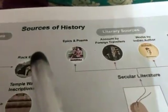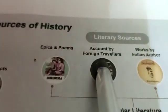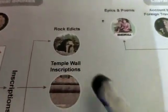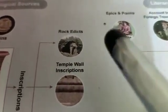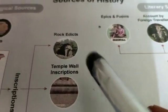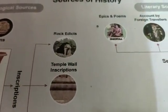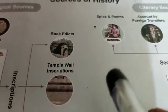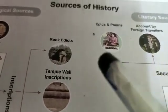So, sources of history — we discussed two types: first is archaeological source, second is literary source. Dear students, please write this chart on paper and send it to me as homework. Draw one chart on the page and write it out. We will meet in the next session. Bye-bye, take care.